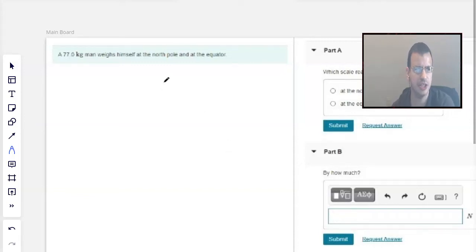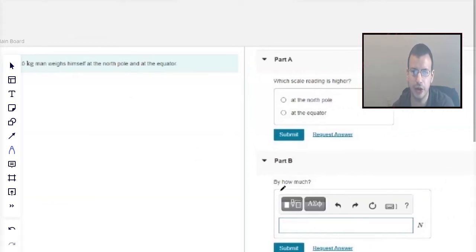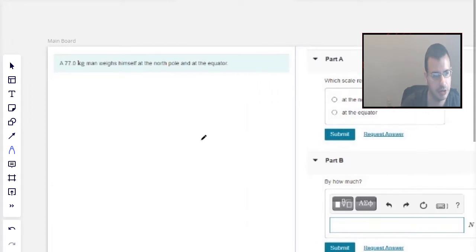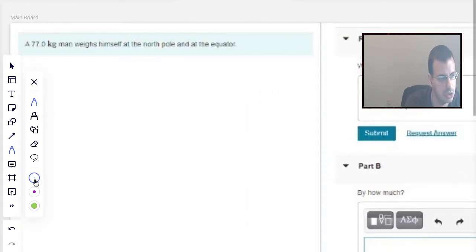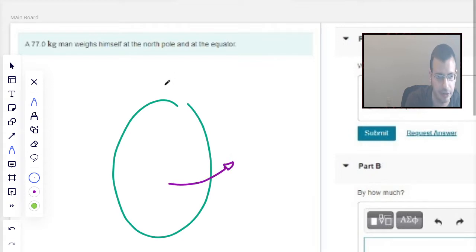A 77-kilogram man weighs himself in the North Pole and at the equator. Which scale reads higher? All right, so I'm going to start by drawing a picture.